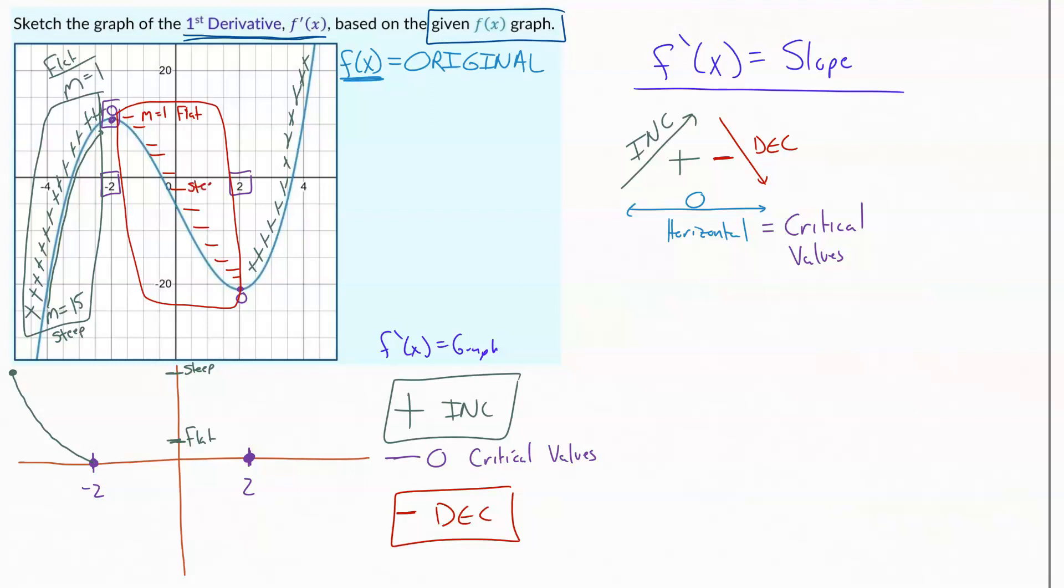It gets steep. The steepest it's going to get somewhere in the middle there. Give yourself a random number. It's not as steep as the other stuff, maybe like a 10. And then again, it flattens out as we get towards our other zero. So we're going to go flat again. We're looking at an m equals negative 1.